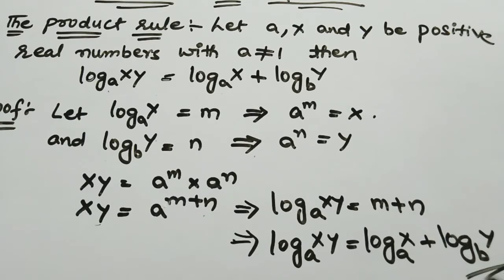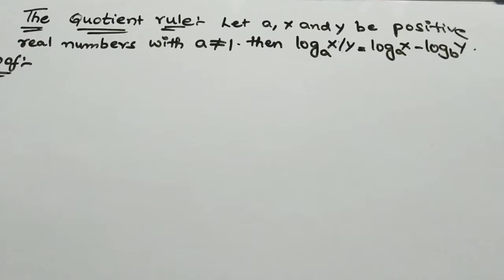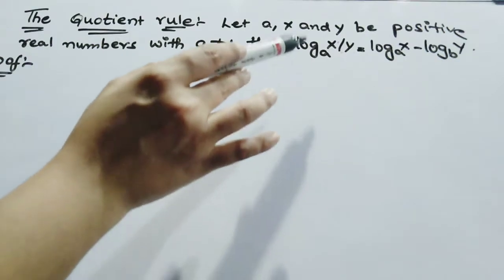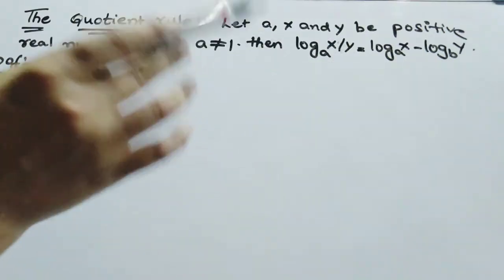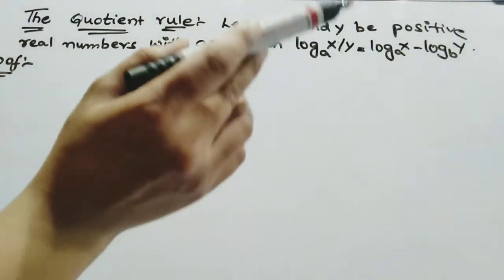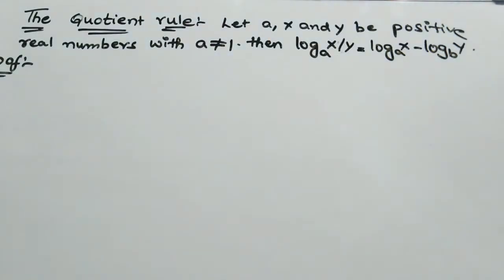Our next property of logarithm is the quotient rule. Let a, x, and y be positive real numbers with a not equal to 1. Then log(x/y) base a equals log x base a minus log y base a. We will prove it.